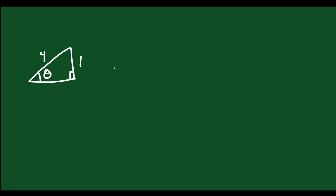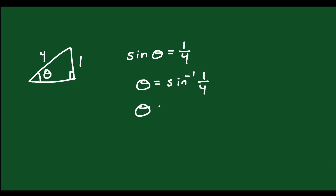Let's do another one. I have a right triangle with angle theta, opposite side = 1, and hypotenuse = 4. Since I have the opposite and hypotenuse, I'll use sine. Sine theta equals opposite over hypotenuse, so 1 over 4. Therefore, theta equals sine inverse of 1 over 4. Plug that into your calculator and you get theta approximately equal to 14.5 degrees.